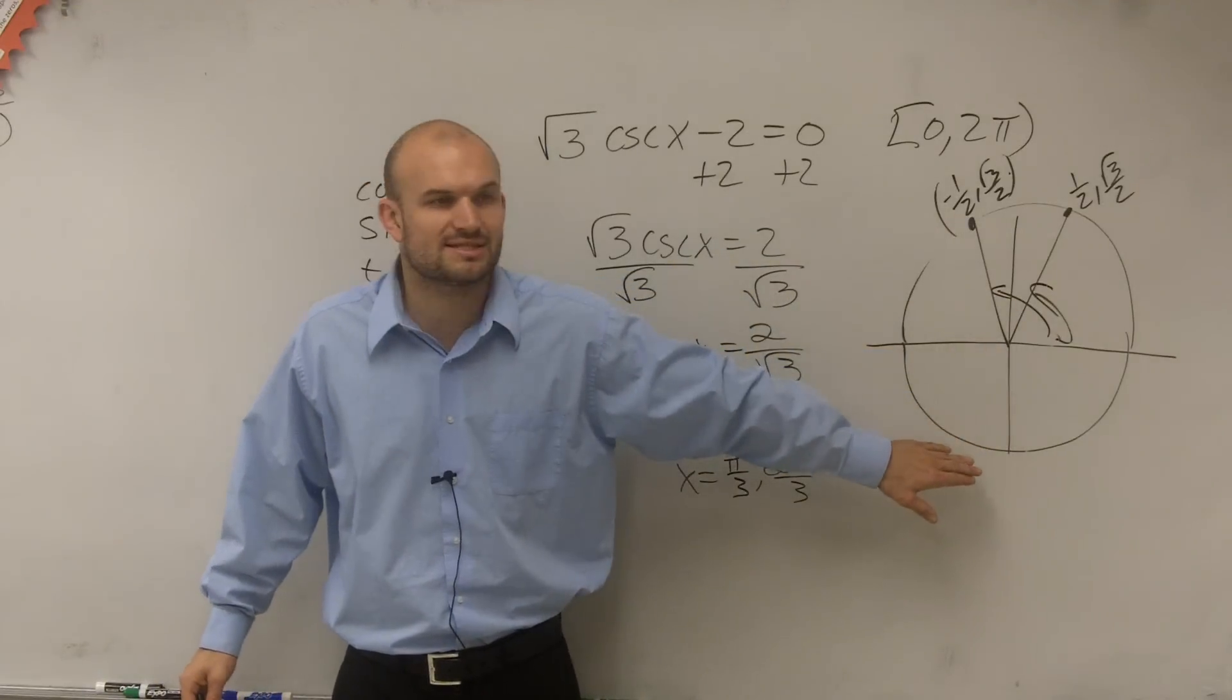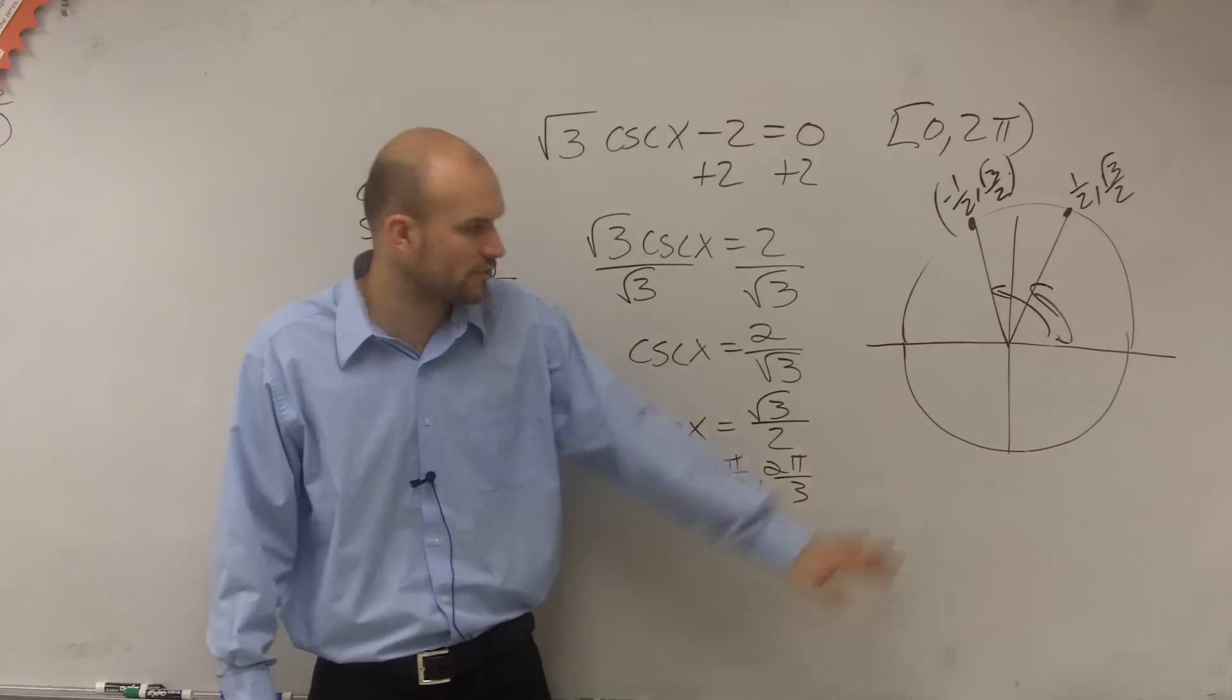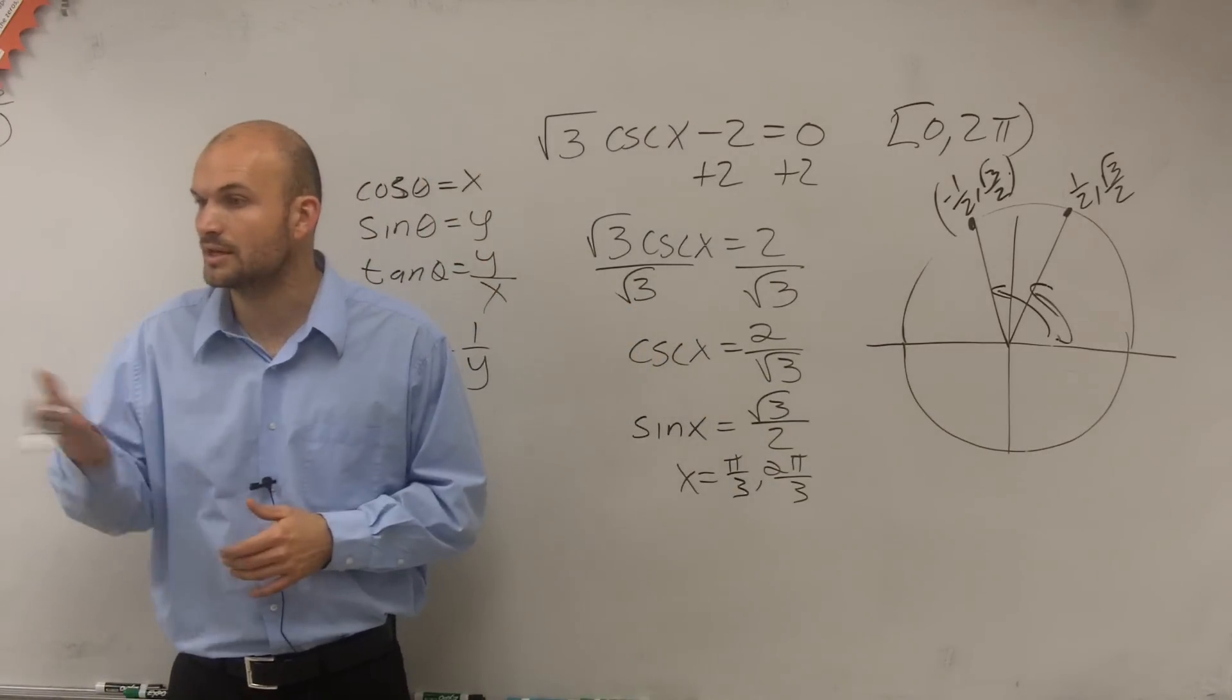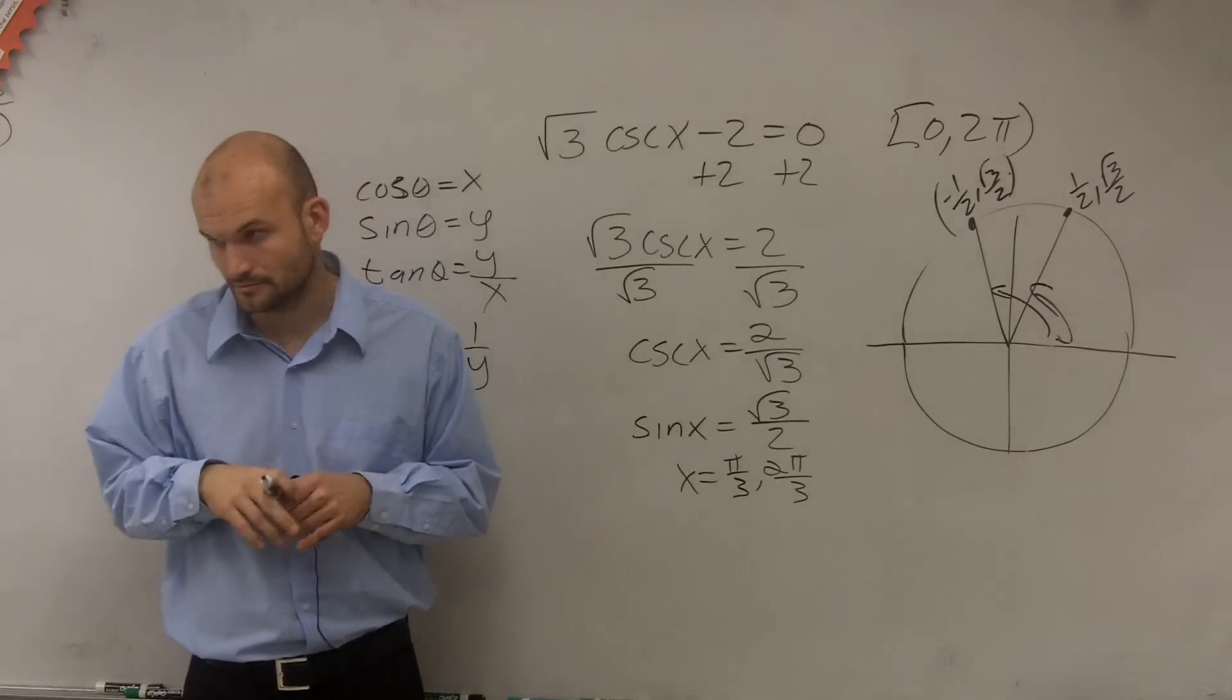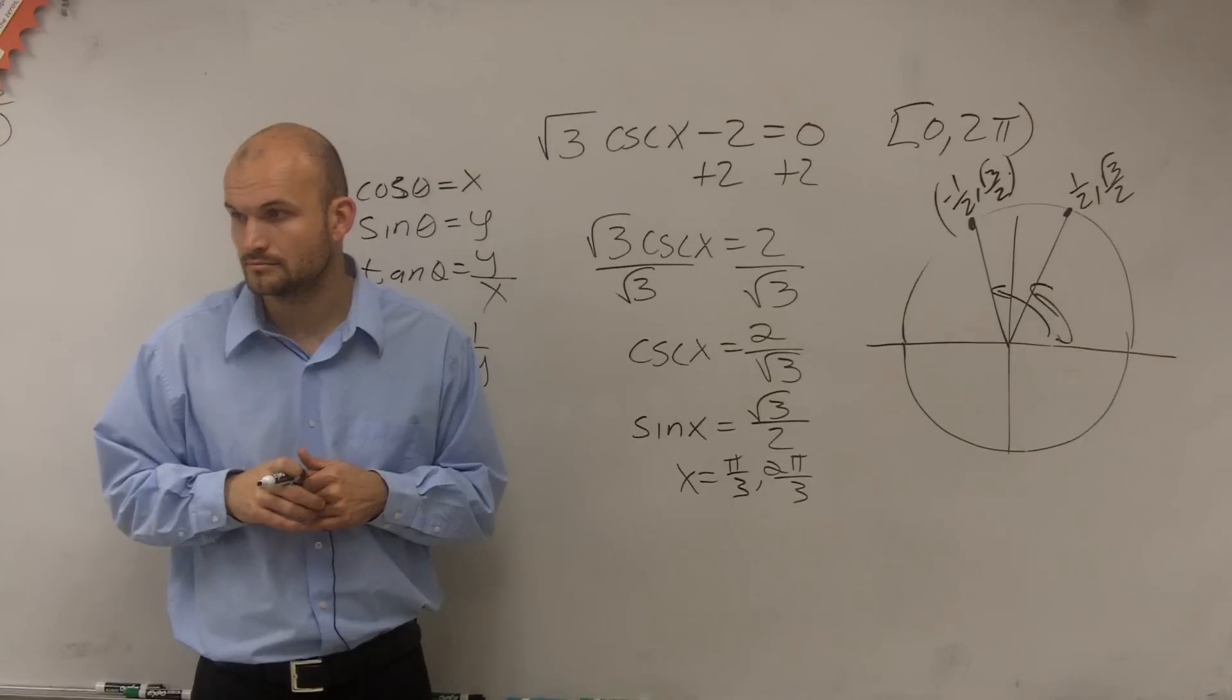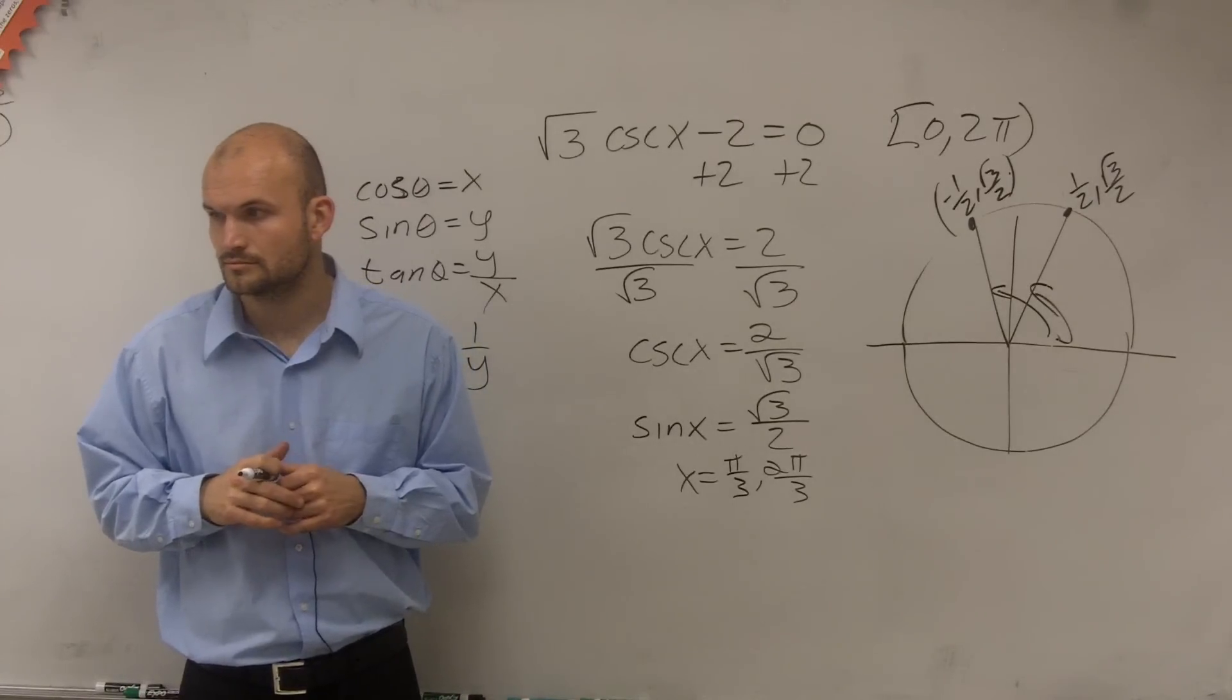None of these other points down here when sine, because sine would equal negative square root of 3 over 2 for any other of those points down in the third or fourth quadrant. So those are going to be your two solutions. Yes? So it's only the right-hand half of the unit circle that deals with cosine, and the rest is like on the top half.